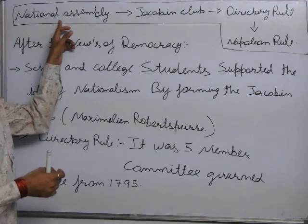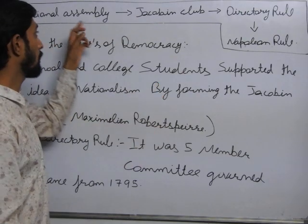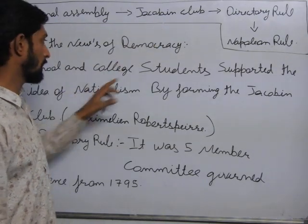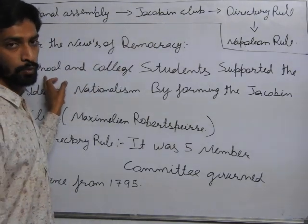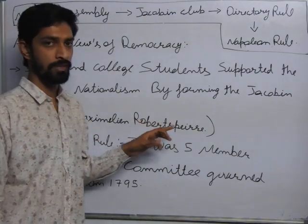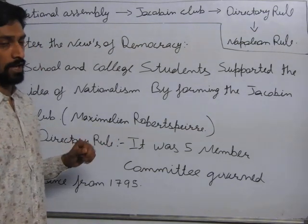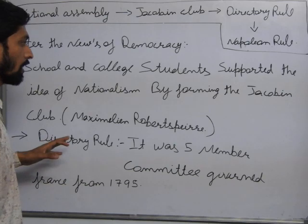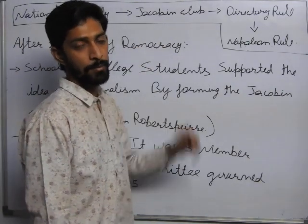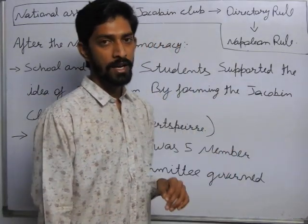I hope you understand. The revolution started, and after the revolution, democracy led to a National Assembly. After the National Assembly came the Jacobin Club. Who were its members? Students of schools and colleges, and their leader was Maximilian Robespierre. The Jacobin Club spread nationalism, and every member worked to rule the country.